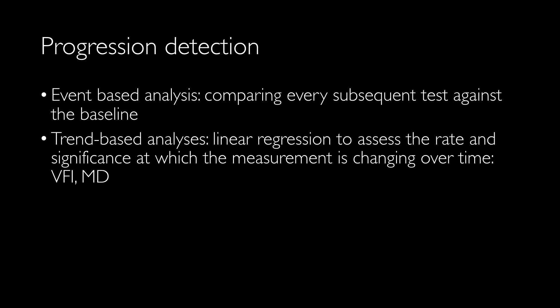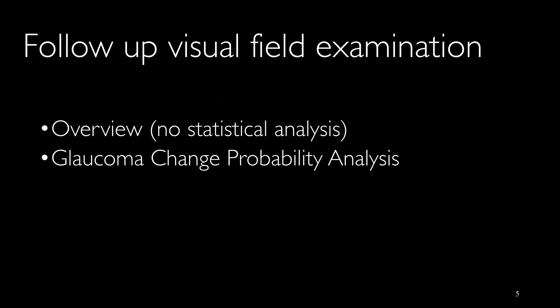For detecting progression, we may use event-based analysis and trend-based analysis. In event-based analysis, the latest visual field will be compared to the baseline. In trend-based analysis, linear regression will be used to assess the rate of changes over time, and VFI and mean deviation are used for this analysis.